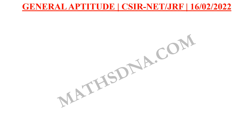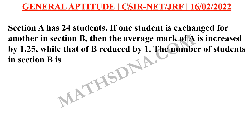Moving on to the question. The question is: Section A has 24 students. If one student is exchanged for another in Section B, then the average marks of A is increased by 1.25 while that of B is reduced by 1. Then the number of students in Section B is?